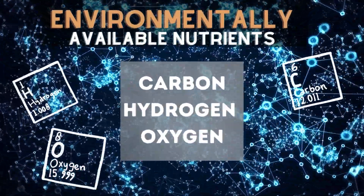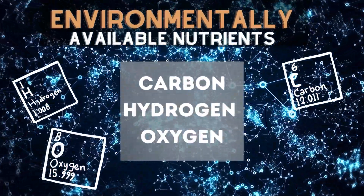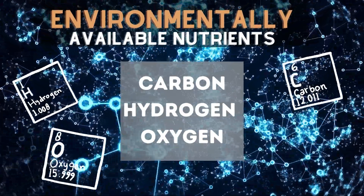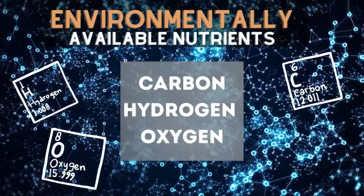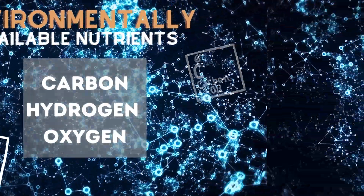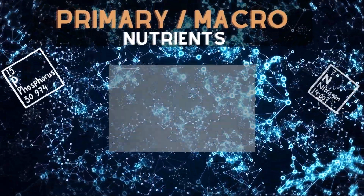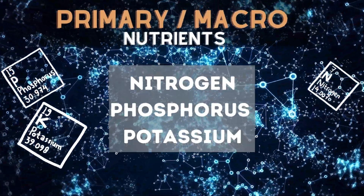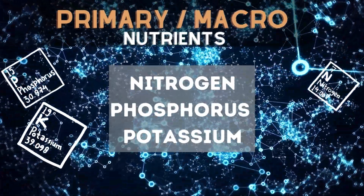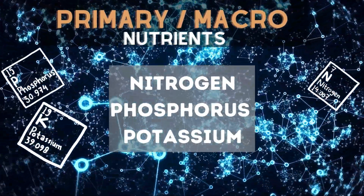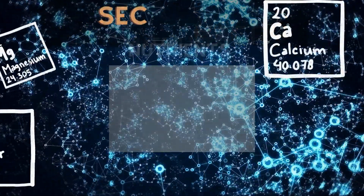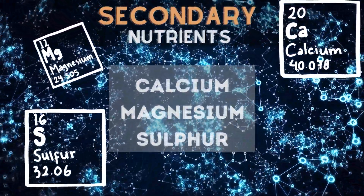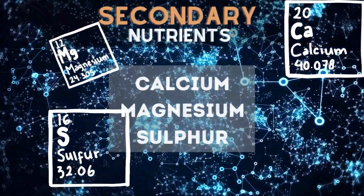Environmentally available nutrients are carbon, hydrogen, and oxygen. Primary nutrients include nitrogen, phosphorus, and potassium. Secondary nutrients are calcium, magnesium, and sulfur.